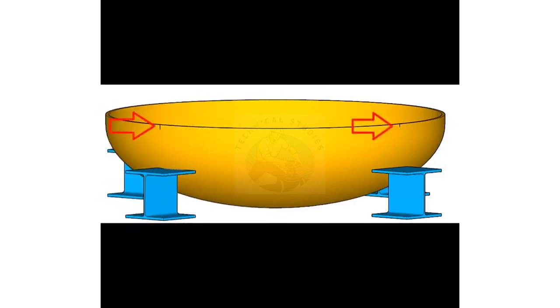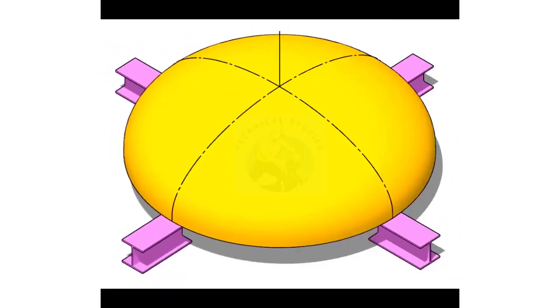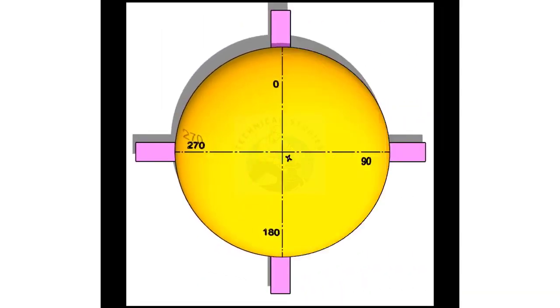Divide the circumference of the dish end into minimum four equal parts. Now, put the dish end upside down and level. Draw lines through the center, connecting the previously marked points. Mark the 0, 90, 180 and 270 degrees.